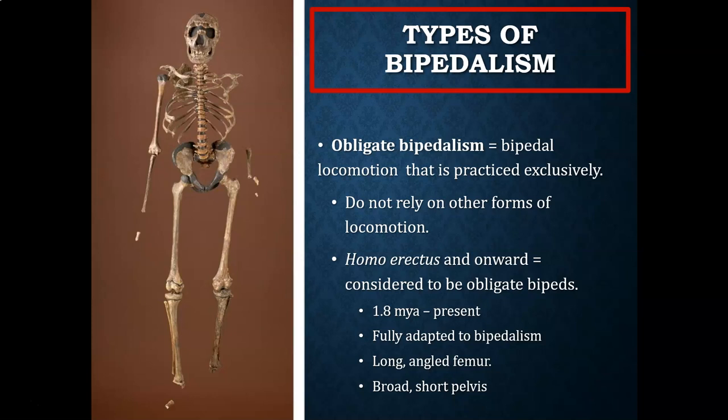We won't get to Homo erectus fossils until two chapters from now, but as a preview: Homo erectus is fully adapted to bipedal locomotion. The femurs are long and angled inward towards the knee, there is a linea aspera on the back of the femur for ligament and muscle attachment important for walking and running, and the pelvis is overall short and broad. The pelvic inlet — essentially the birth canal — is narrower, making childbirth more dangerous and complicated, which is one of the evolutionary trade-offs of bipedal locomotion.